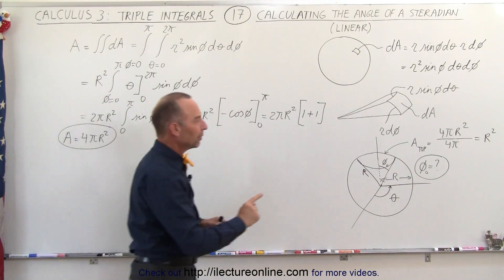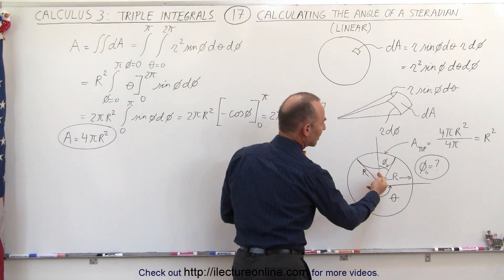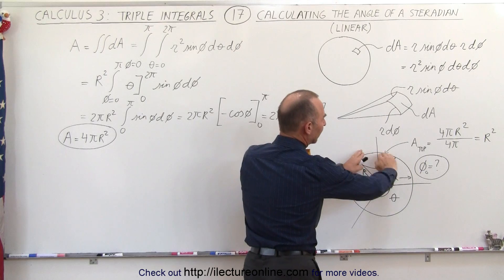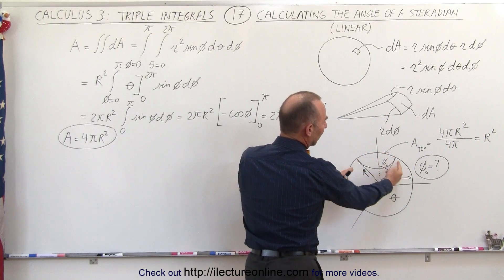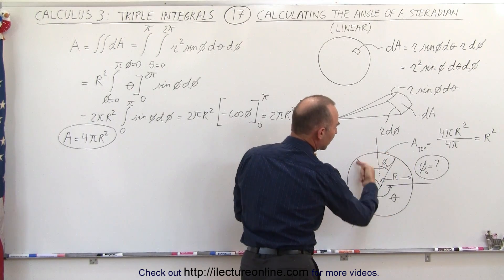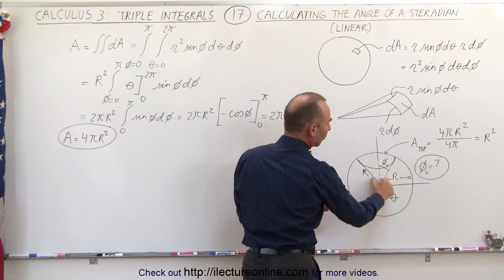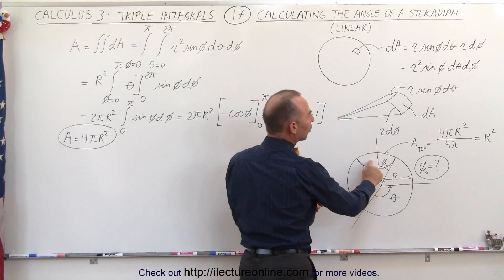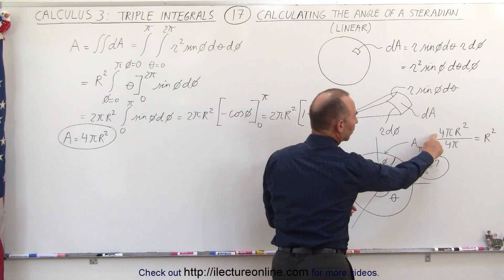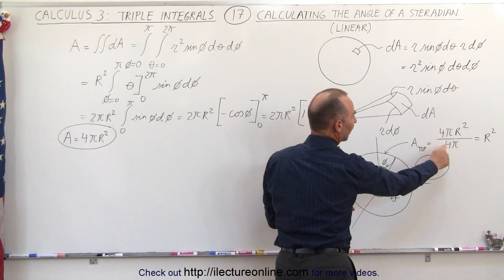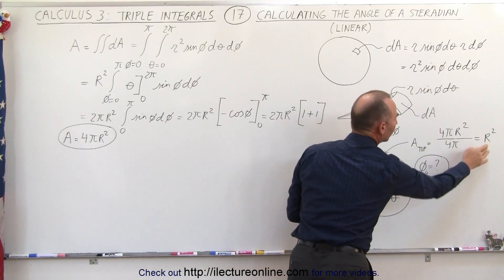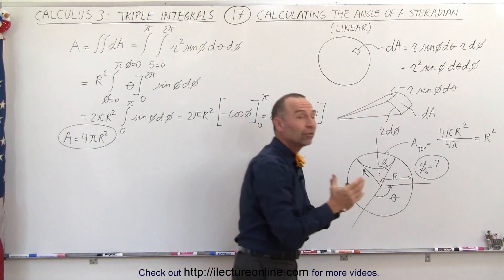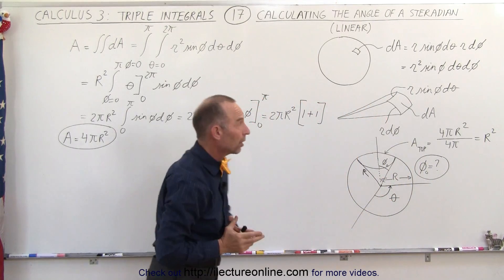If we have a solid angle of a steradian, the surface area that you subtend because of the steradian angle is going to equal the total area of the sphere divided by 4π, which is equal to the radius of the sphere squared.